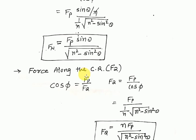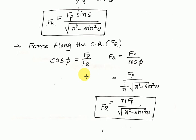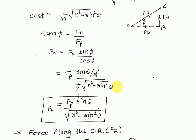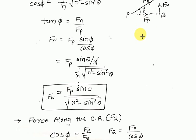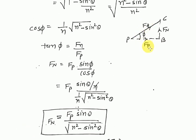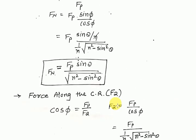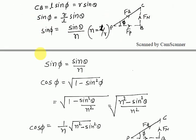Third: force along the connecting rod, fq. From the figure, cos φ = fp / fq, so fq = fp / cos φ. Substituting the value of cos φ = (1/n)√(n² − sin²θ), we get fq = n × fp / √(n² − sin²θ).